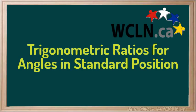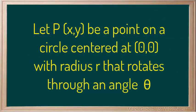Trigonometric ratios for angles in standard position. Let P(x,y) be a point on a circle centered at (0,0) with radius R that rotates through an angle theta.